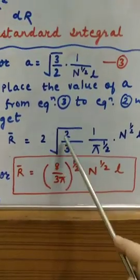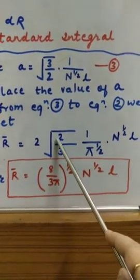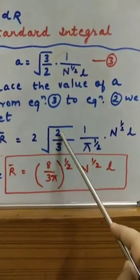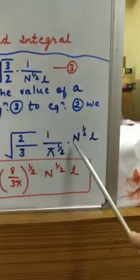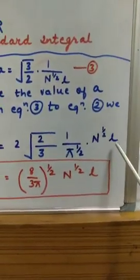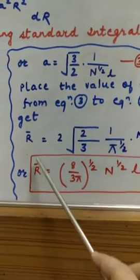We know that when it will go inside, it will become 4. So 4, 8 upon 3 pi overall to the power half, n to the power half and l. So this is your final r bar.